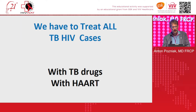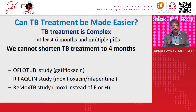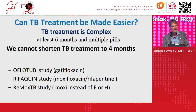We have to treat all TB-HIV cases with TB drugs and with antiretrovirals, and that's where we get a lot of complex interactions. For drug-sensitive TB, you all know this — six months and multiple pills. You're lucky to have isoniazid 300mg; in the UK we only have 100mg pills, so our pill burden can be even bigger.